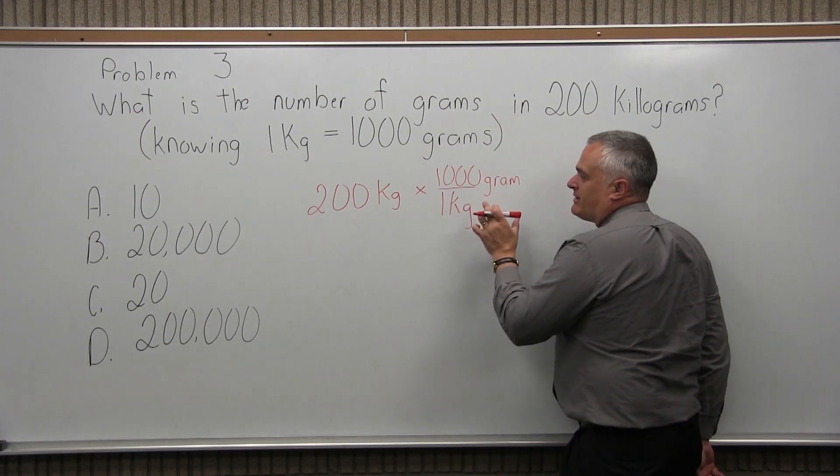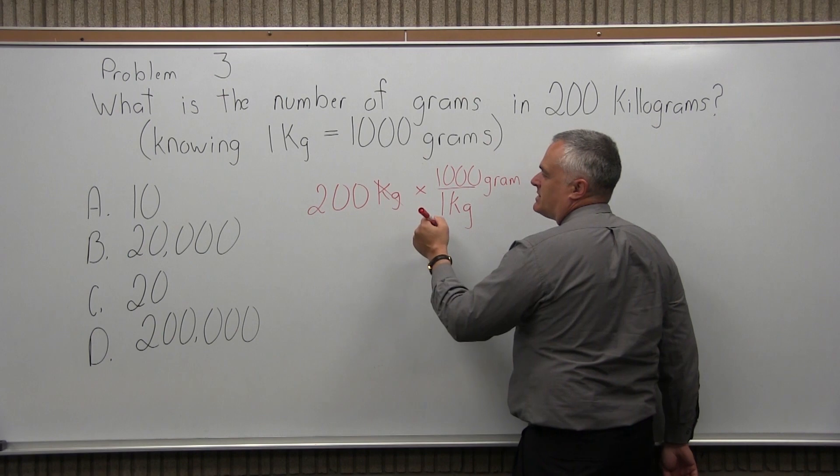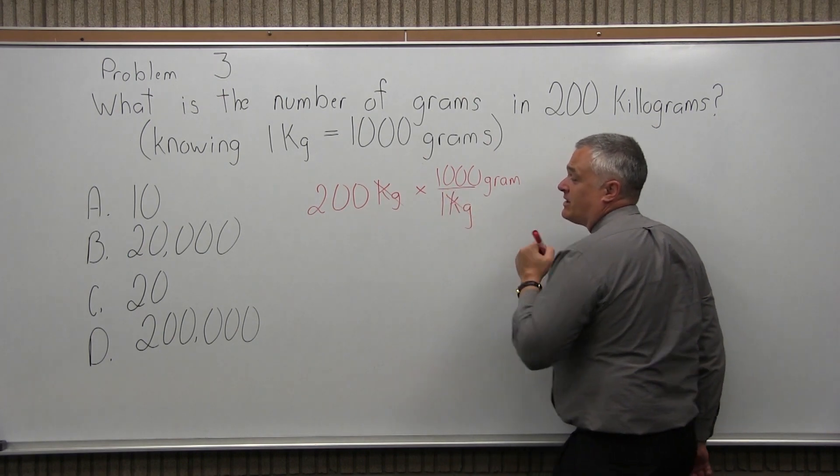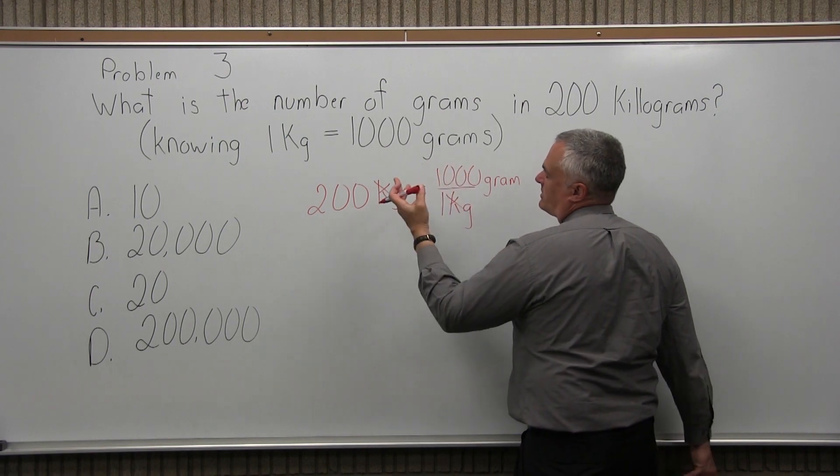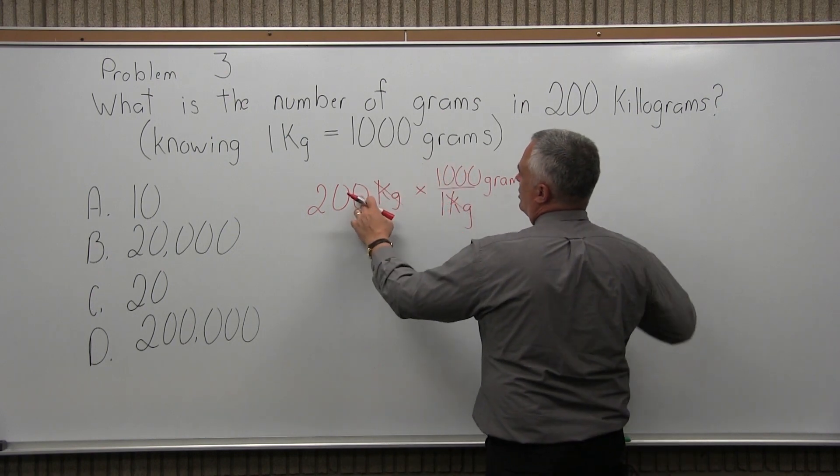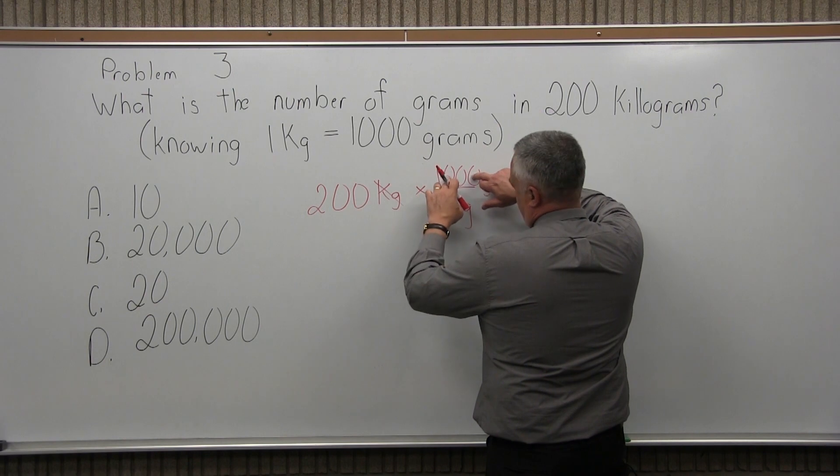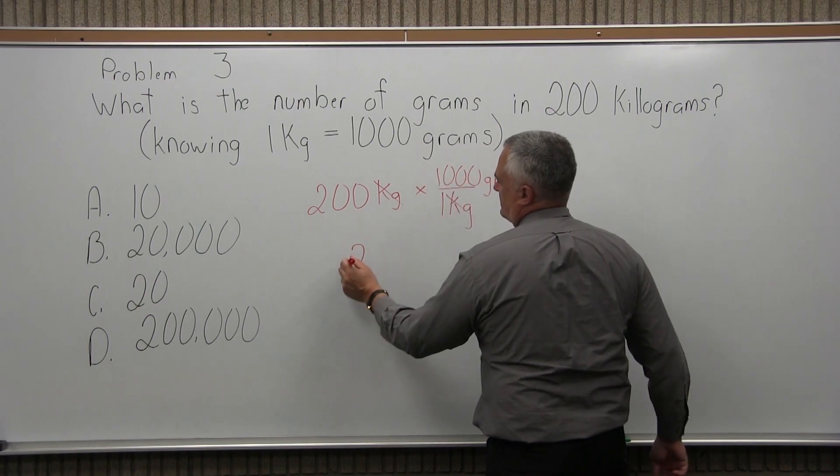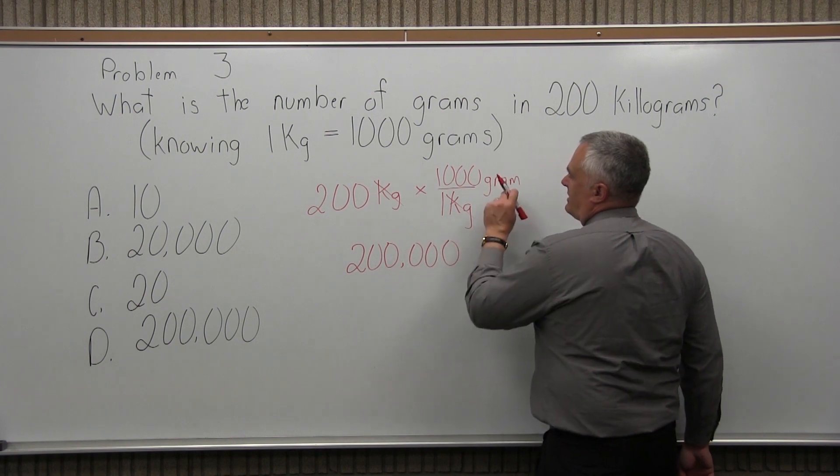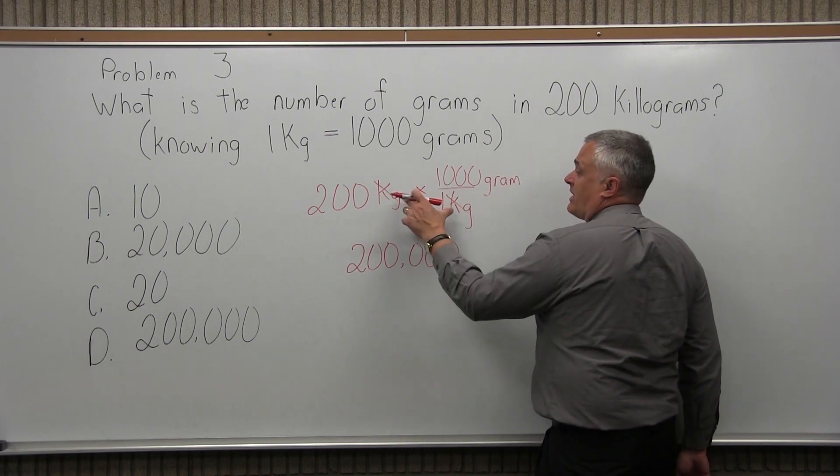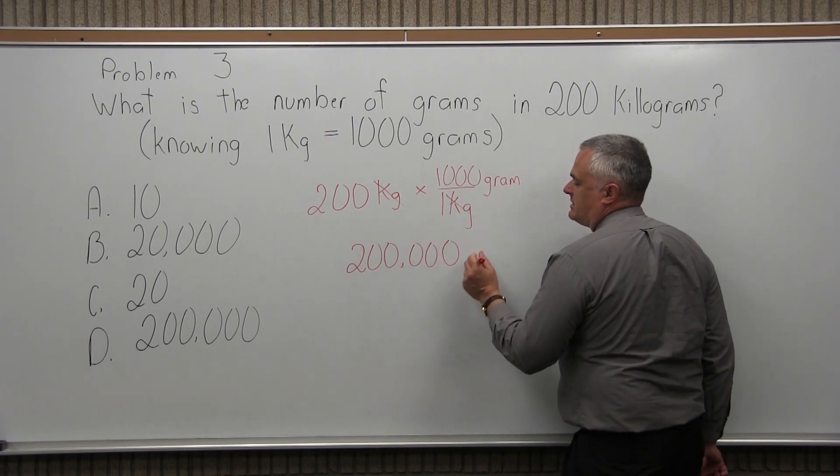Now, when I multiply times 1, kilograms in the numerator, kilograms in the denominator, it cancels. And I have 200 times 1,000 divide by 1. Well, the divide by 1, you don't really have to worry about. 200 times 1,000. The times 1,000, I'm going to put three zeros on the end of the 200. And I get 200,000, and the units that are left after I cancel the kilograms is grams.